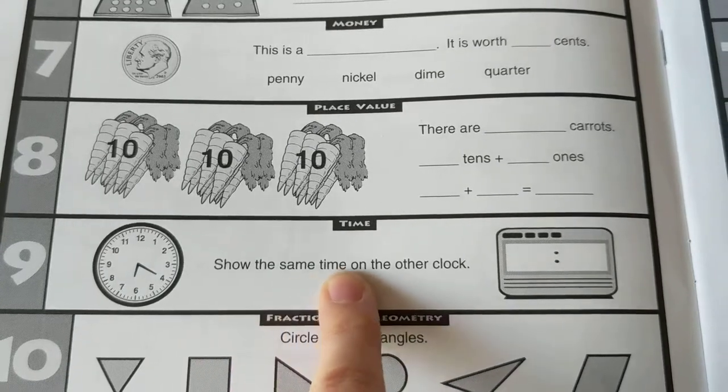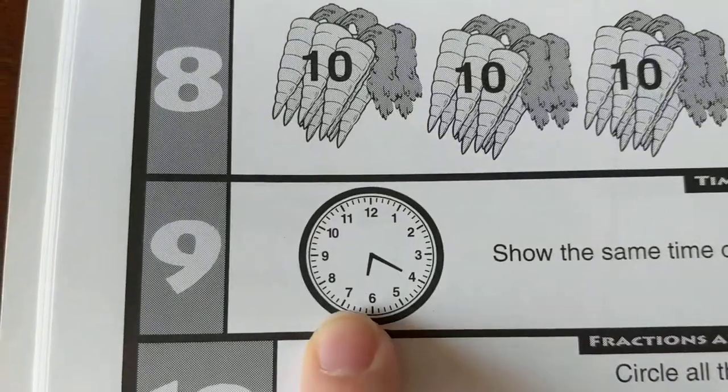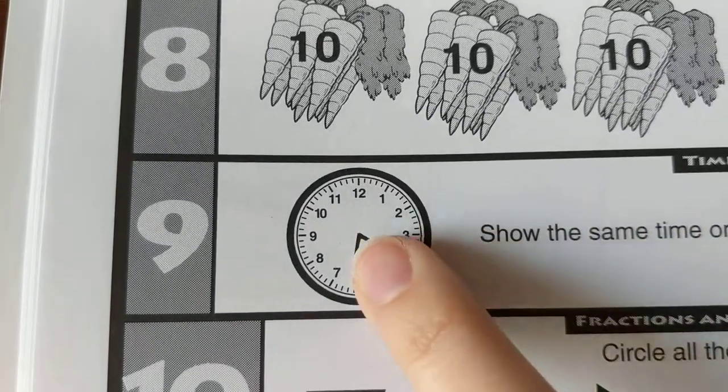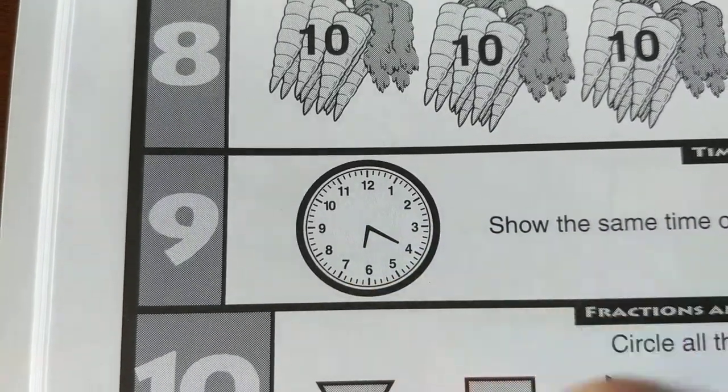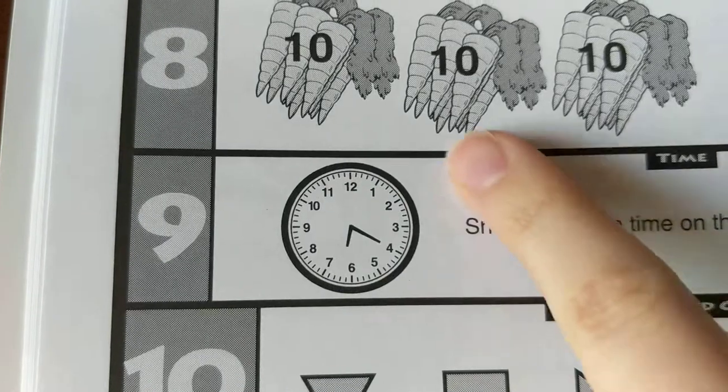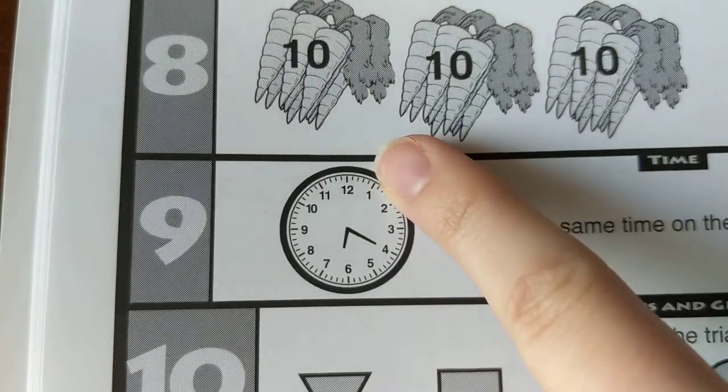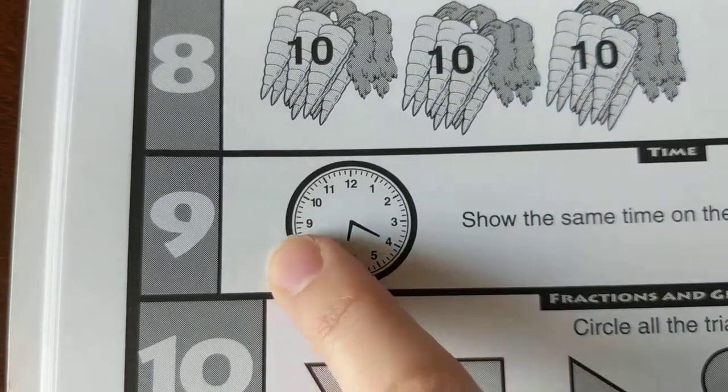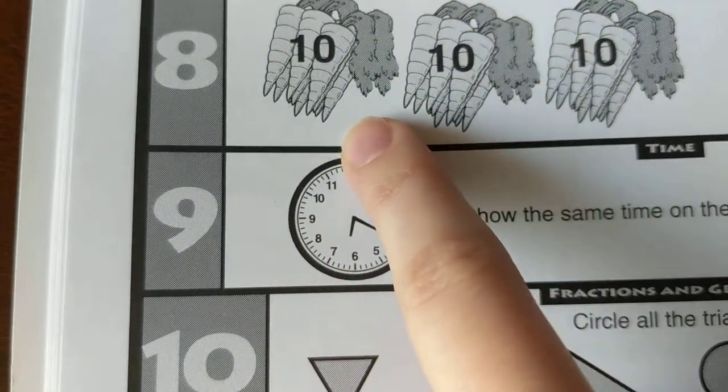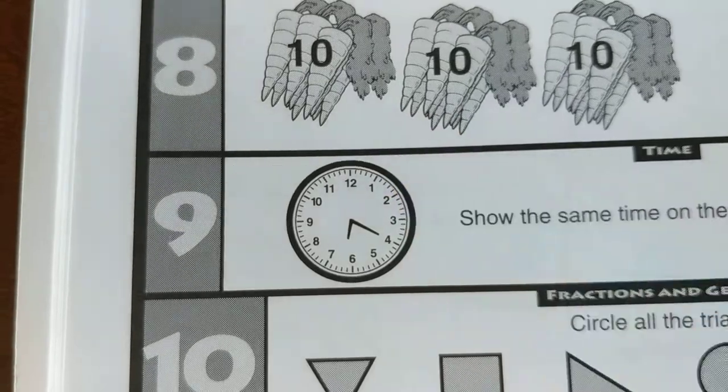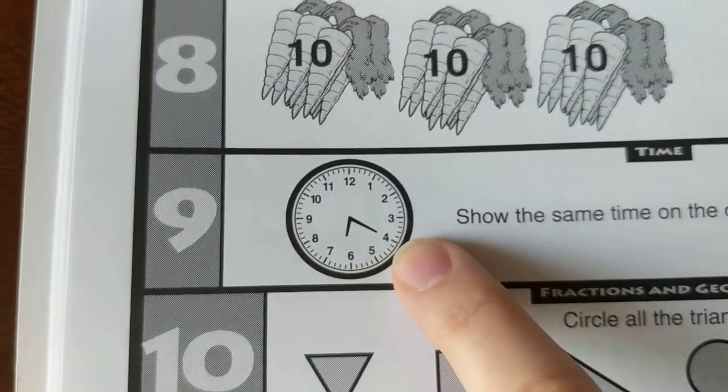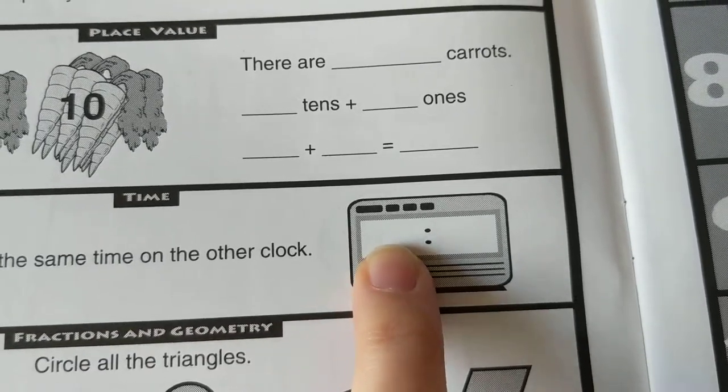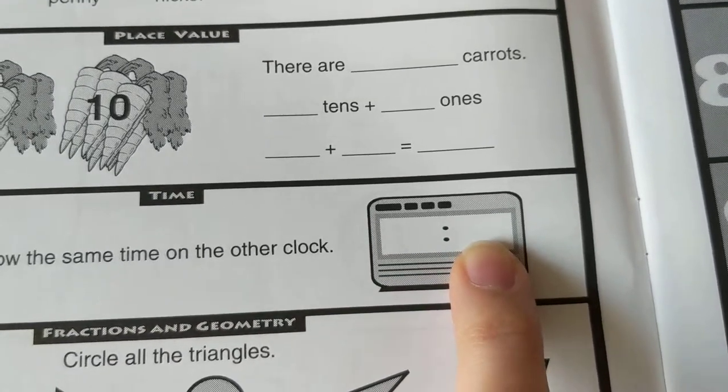Number nine, show the same time on the other clock. Now let's look here. Look at my hour hand. Look at what room that's in. And then look at my minute hand. Remember I count by fives around the clock. Five, 10, 15, 20, 25, 30, 35, 40, 45, 50, 55, 0. Now you have to see where you stop. Where is that hand pointing? Then you need to write the time over here. The hour comes here, and then the minutes go after the colon.